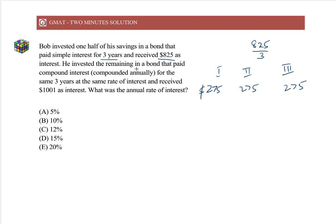The remaining half paid compound interest for the same three years at the same rate and received $1001 as interest. Why did he receive higher CI? This was higher by $176.